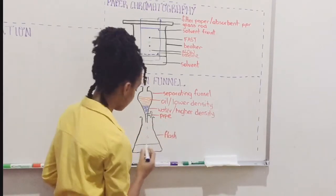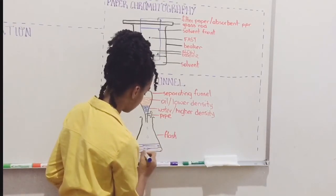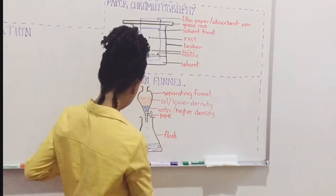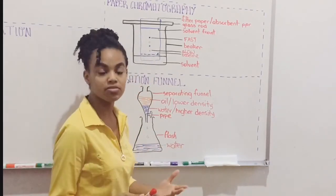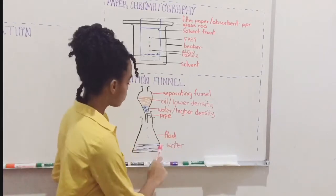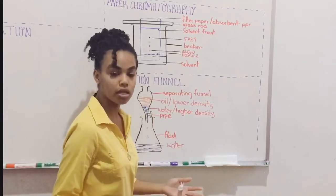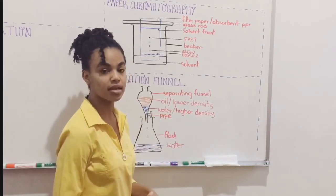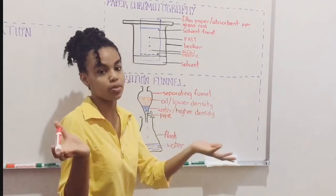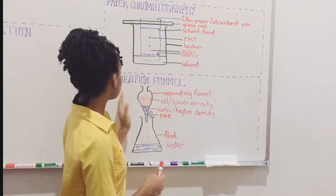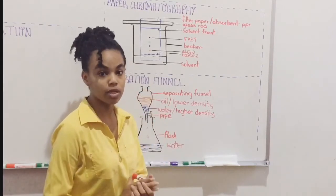So what we have collecting in this flask so far is the liquid with the higher density — in this case, water. As soon as the water has drained from the separating funnel, you turn off the tap, switch your flask, and you can allow the oil or the liquid with the lower density to drip into the flask. And then you have two immiscible liquids separated into different flasks. So the function of the separating funnel is to separate two immiscible liquids.